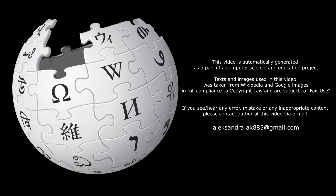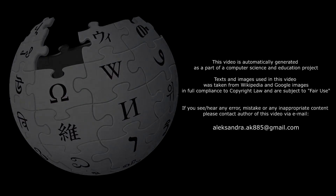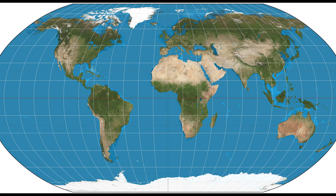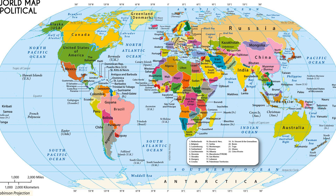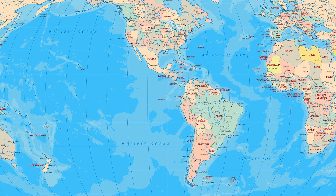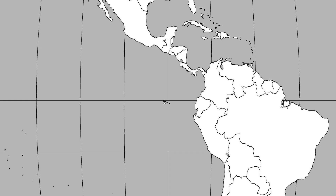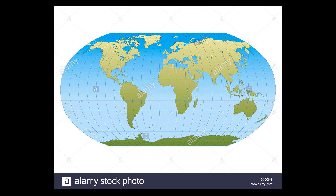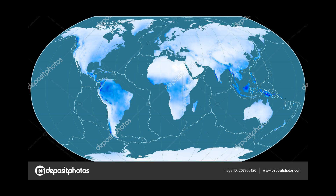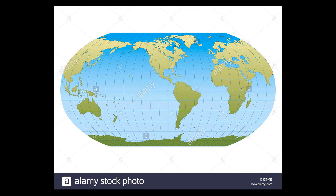The Robinson Projection is a map projection of a world map which shows the entire world at once. It was specifically created in an attempt to find a good compromise to the problem of readily showing the whole globe as a flat image. The Robinson Projection was devised by Arthur H. Robinson in 1963 in response to an appeal from the Rand McNally Company, which has used the projection in general-purpose world maps since that time.